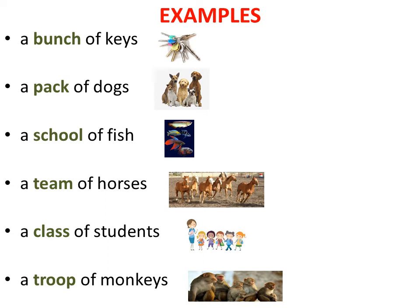Let's see some more examples. A bunch of geese, a pack of dogs — when you see lots of dogs on the street. If you see fish together, a school of fish. A team of horses, a class of students. And if you see monkeys on a tree, a troop of monkeys. So bunch, pack, school, team, class, and troop are all collective nouns.